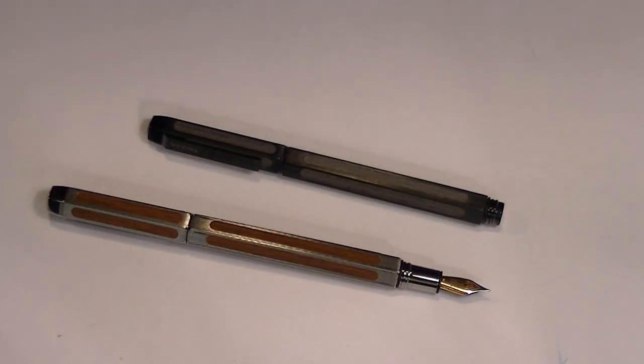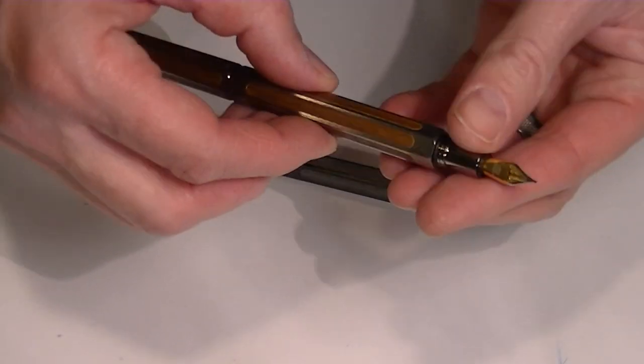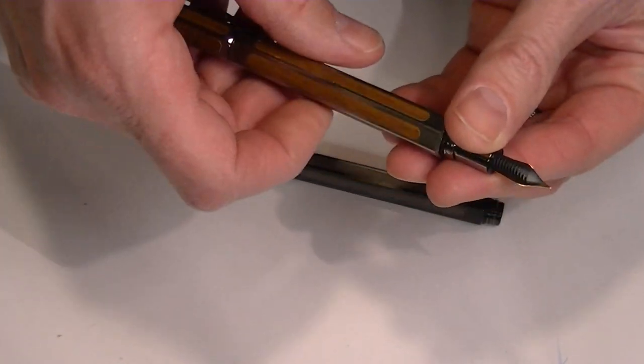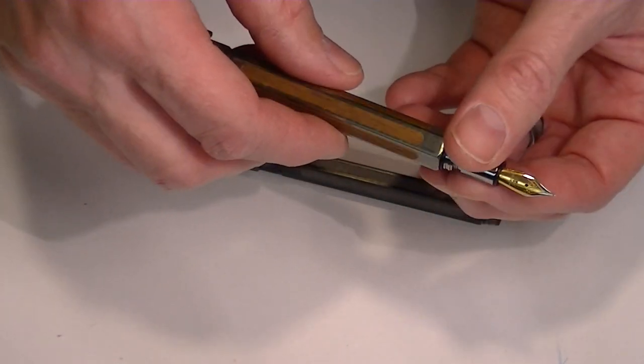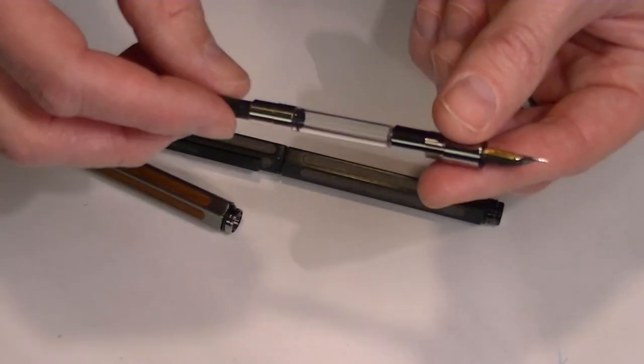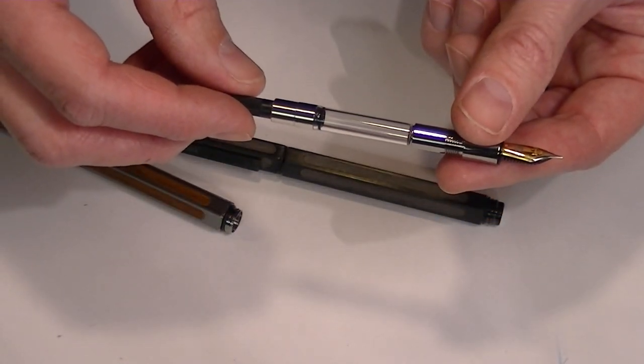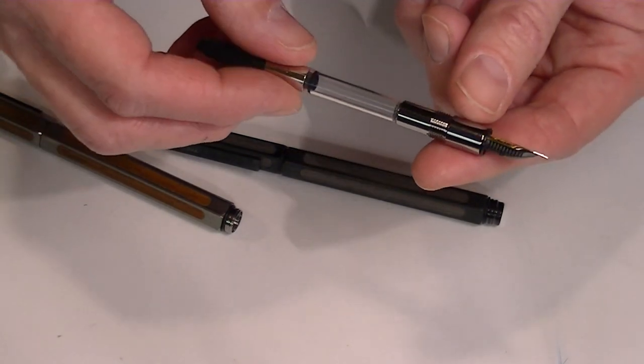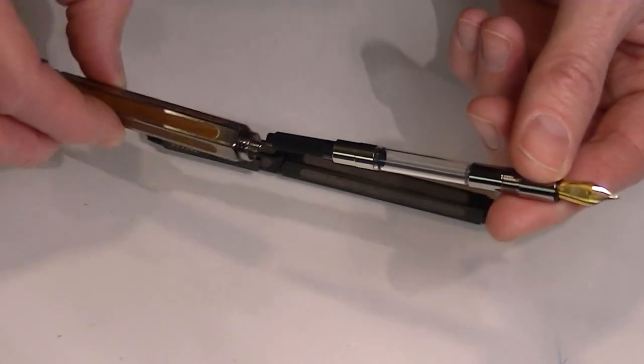The nib is an iridium nib. It's a German-made nib. To replace the ink in this pen, you simply unscrew the nib from the barrel, and inside is a converter that comes included with the pen. You can also replace that if you'd like to use a cartridge instead.